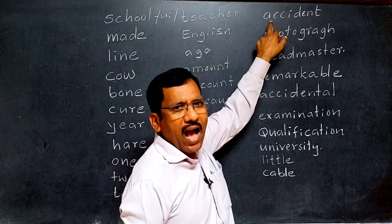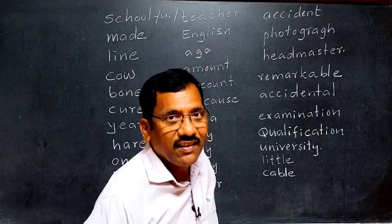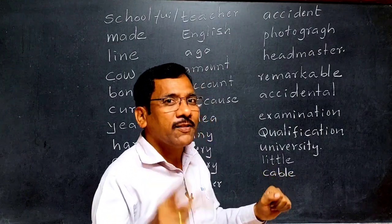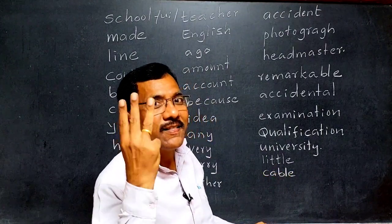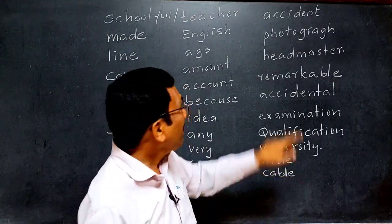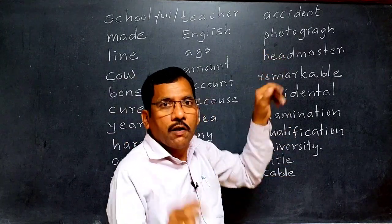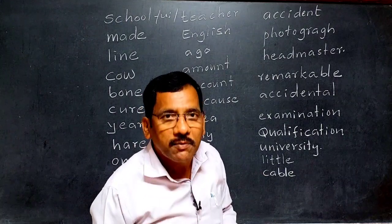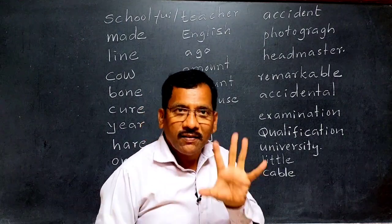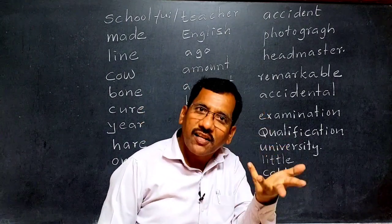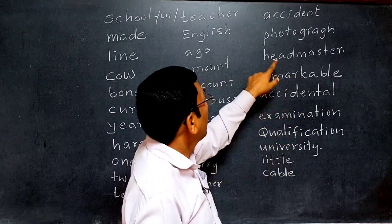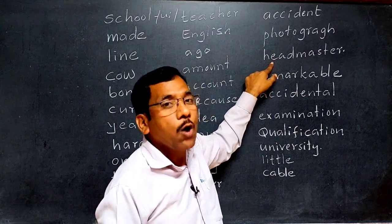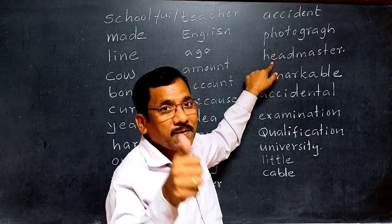'Accident' — 'ac,' 'ci,' 'dent' — three vowel sounds, so three syllables. 'Photograph' — three vowel sounds, three syllables. 'Headmaster' — how many syllables? Three syllables. 'Remarkable' — how many syllables? Four syllables. 'Accidental' — four vowel sounds, so four syllables.